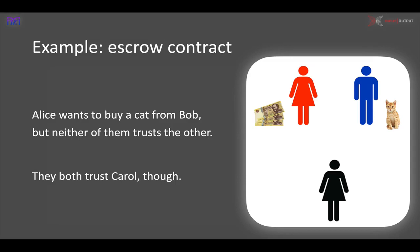The answer is that we have a three-person contract involving a trusted mutual friend. Alice knows Carol, Bob knows Carol, and both Alice and Bob trust Carol. So we can write a contract that will ensure that either the cat gets transferred and the money transferred, or neither.